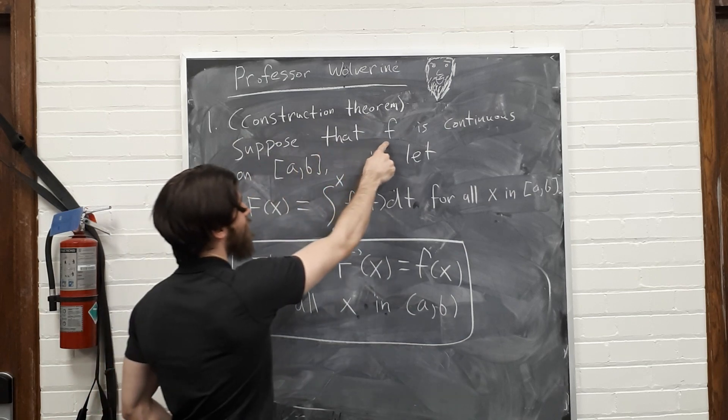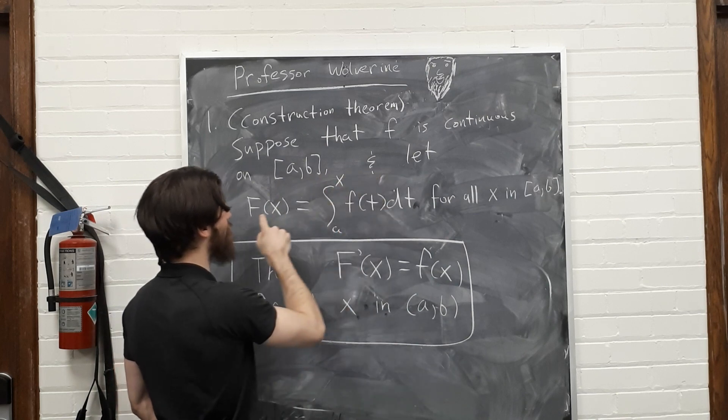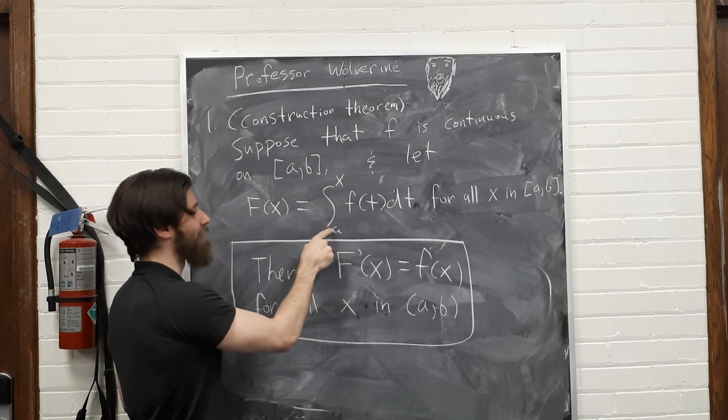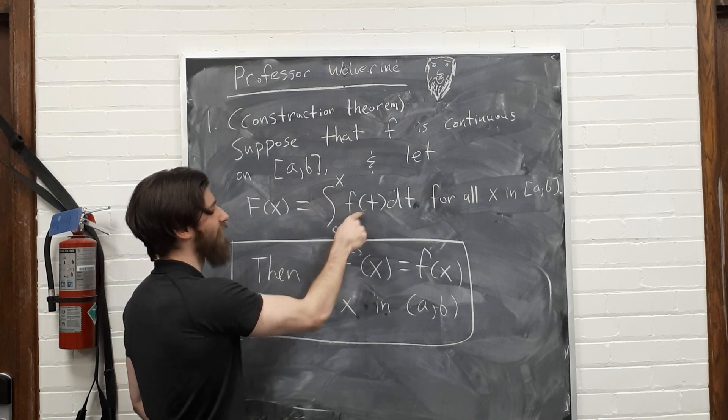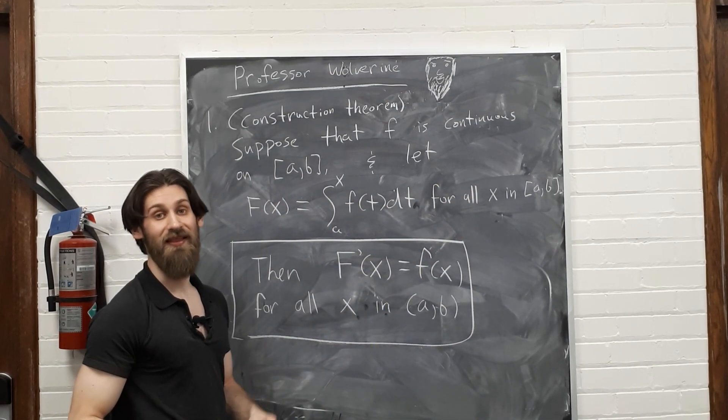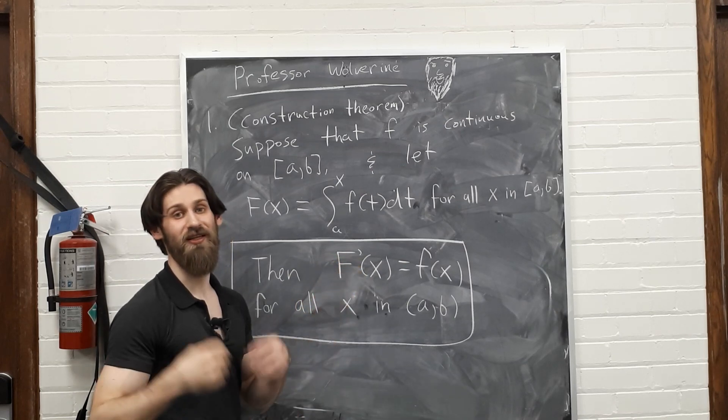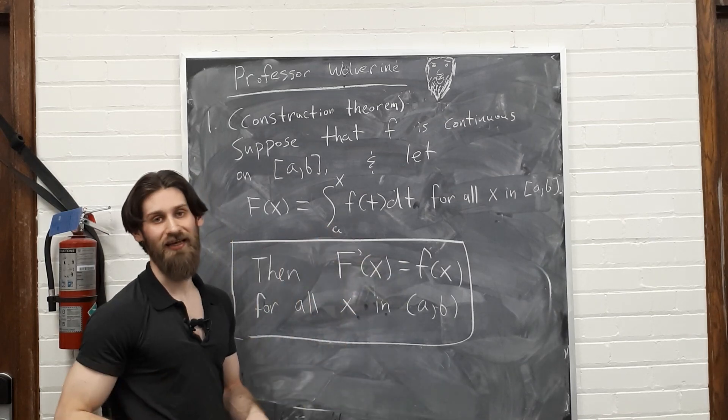Suppose that little f is a continuous function on the closed interval a to b, and let big F of x be the Riemann integral from a to x of little f, for all x in the interval a to b. Then the theorem tells you that the derivative of big F is equal to little f for all x in the interval a to b.